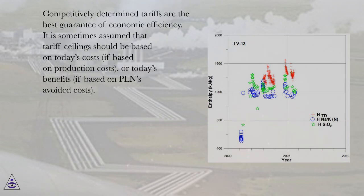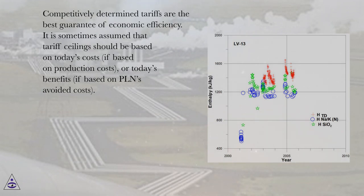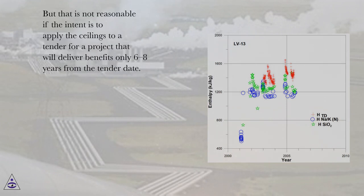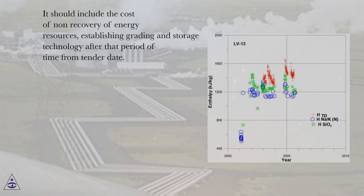Competitively determined tariffs are the best guarantee of economic efficiency. It is sometimes assumed that tariff ceilings should be based on today's costs, if based on production costs, or today's benefits, if based on PLN's avoided costs. But that is not reasonable if the intent is to apply the ceilings to a tender for a project that will deliver benefits only six to eight years from the tender date. It should include the cost of non-recovery of energy resources, establishing grading and storage technology after that period of time from the tender date.